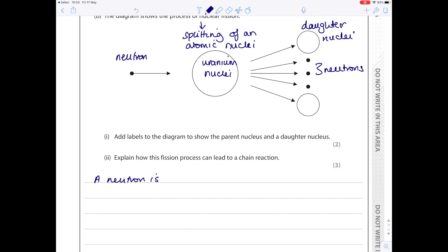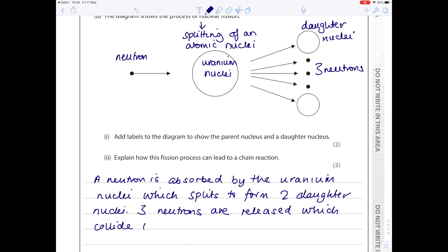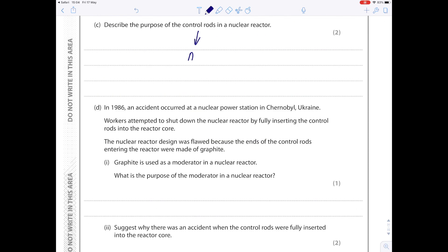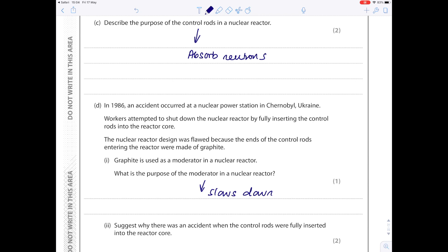If they ask a bit more, it will be along the lines of explain how this fission process can lead to a chain reaction. So we're just going to write what I've just labeled but in full sentences. So write: a neutron is absorbed by the uranium nuclei, which splits to form two daughter nuclei. Three neutrons are released which collide with other uranium nuclei. A chain reaction is set up. And just remember for me that the control rods absorb neutrons, and the moderator slows down neutrons to allow fission reactions to continue.